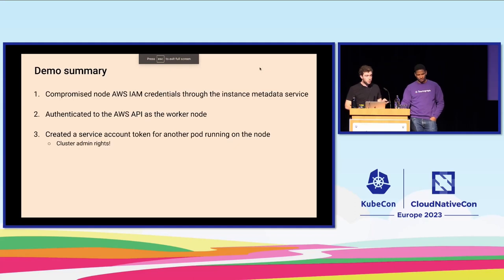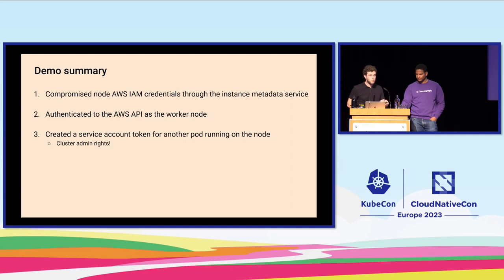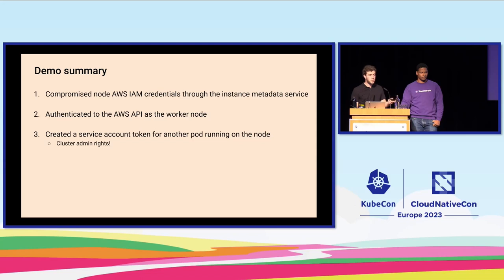So what did we do? First, we compromised node credentials from an application-level vulnerability, which meant we were authenticated both against AWS and against Kubernetes as a node by design. Which means also by design, we were able to create a service account token for any pod running on the node. And we found one with cluster admin rights.